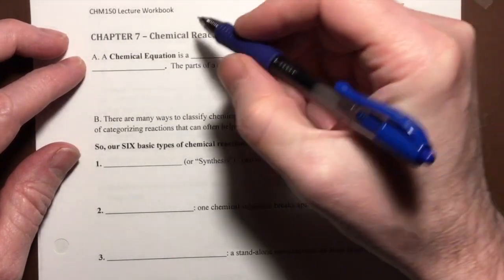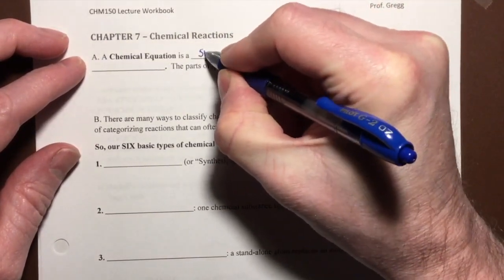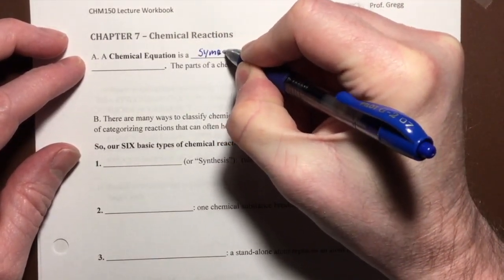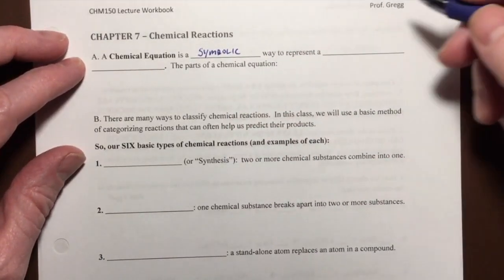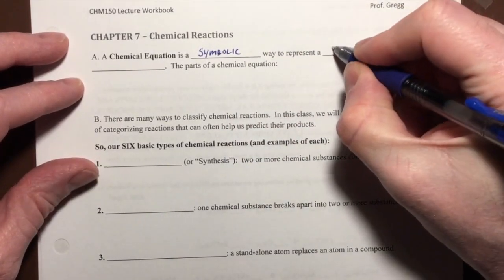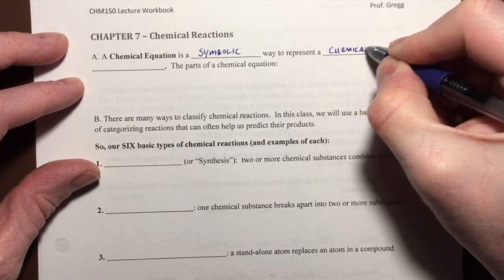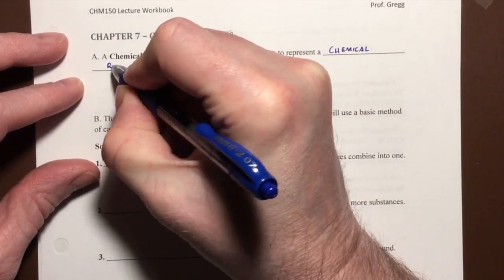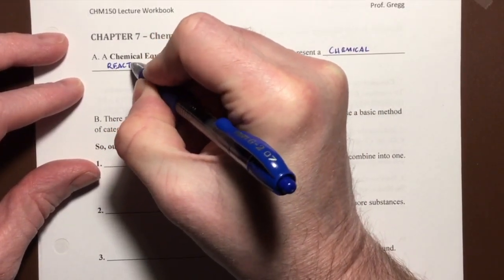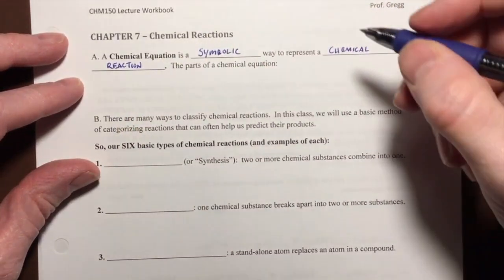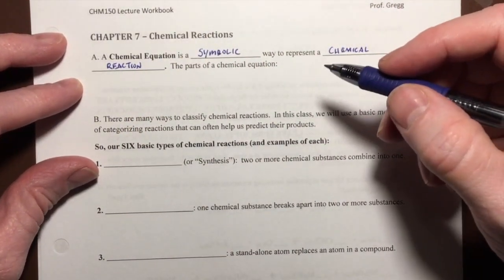A chemical equation is a symbolic way to represent a chemical reaction. We're going to represent a chemical reaction using symbols.